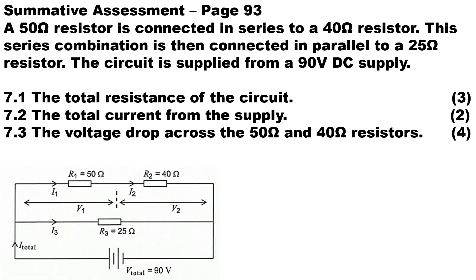This question is taken from the summative assessment in our textbook, question number 7. A 50 ohm resistor is connected in series to a 40 ohm resistor. This series combination is then connected in parallel to a 25 ohm resistor, and the circuit is supplied from 90 volts DC. We have three questions to answer.